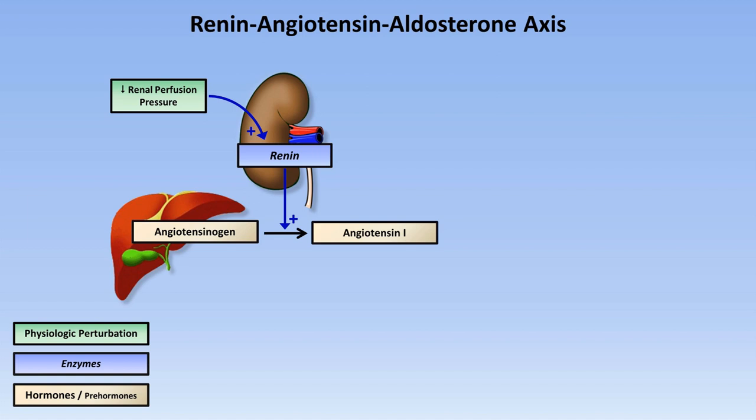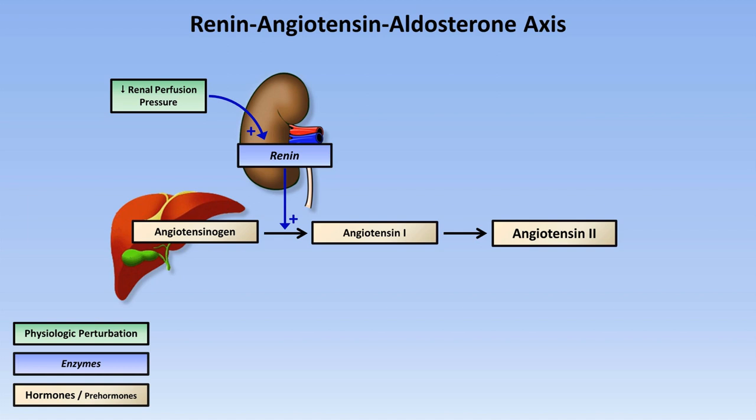Angiotensin-1 is then converted to the active hormone angiotensin-2. This is catalyzed by the angiotensin-converting enzyme produced in multiple locations in the body, but primarily the lungs. Unlike renin, a clinically relevant stimulus for secretion of this enzyme is not well understood or described.